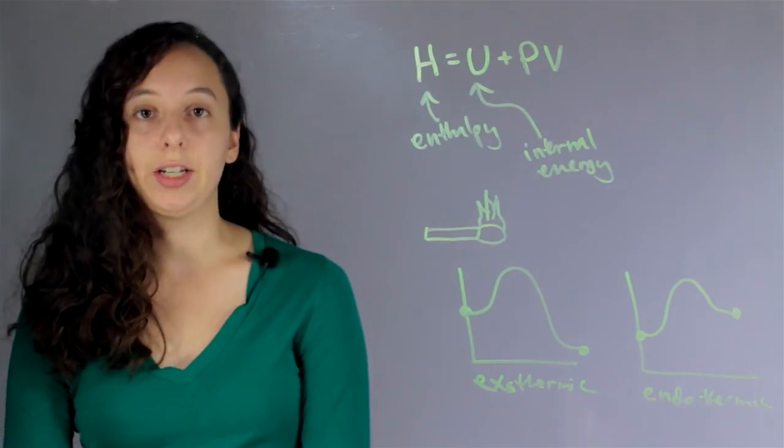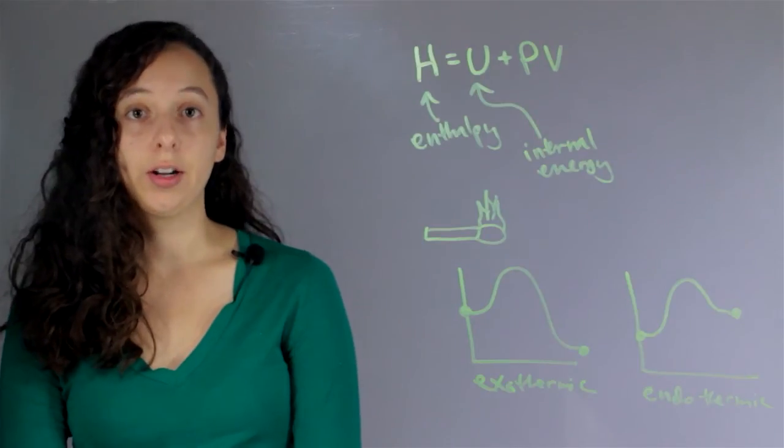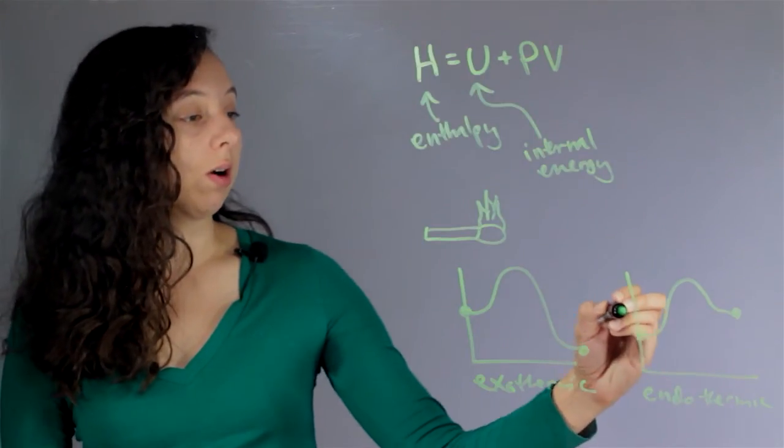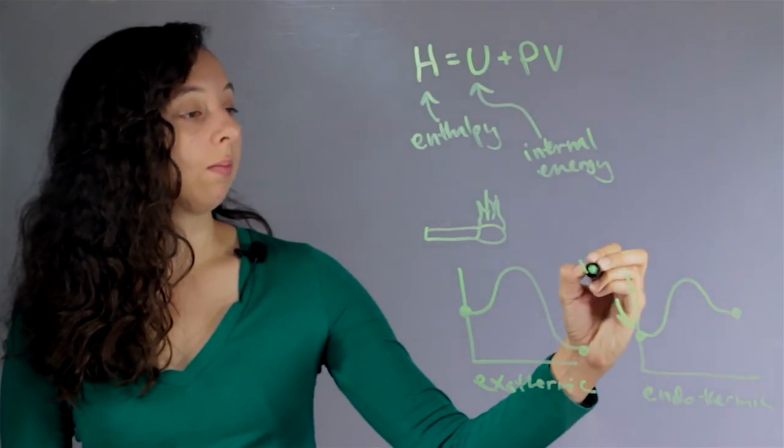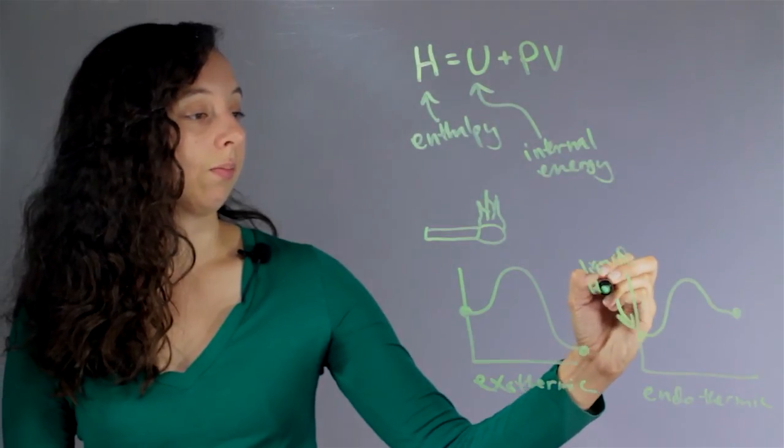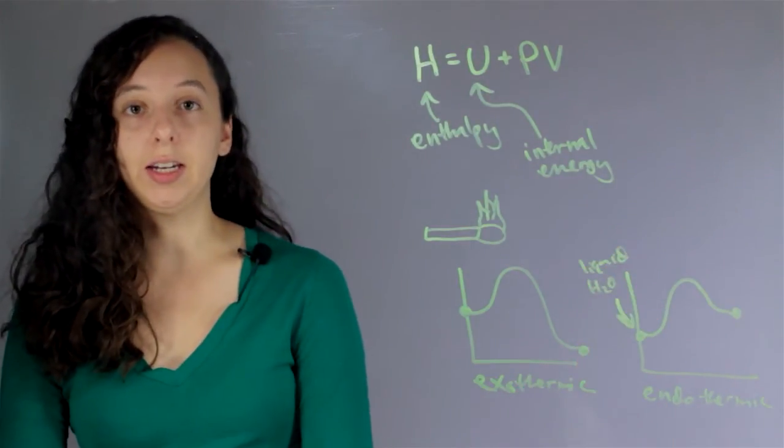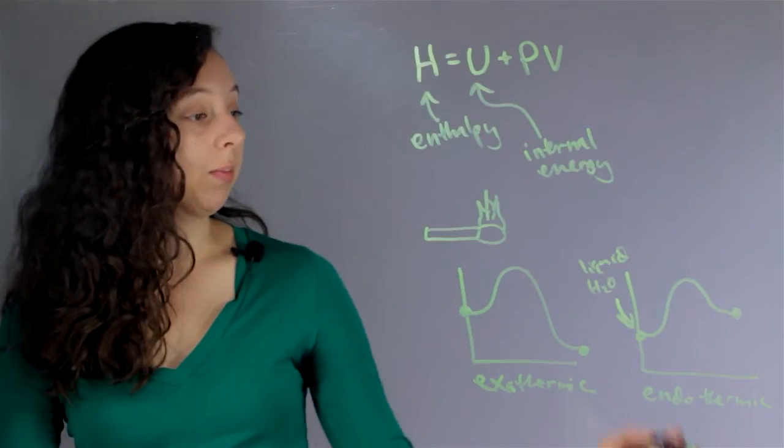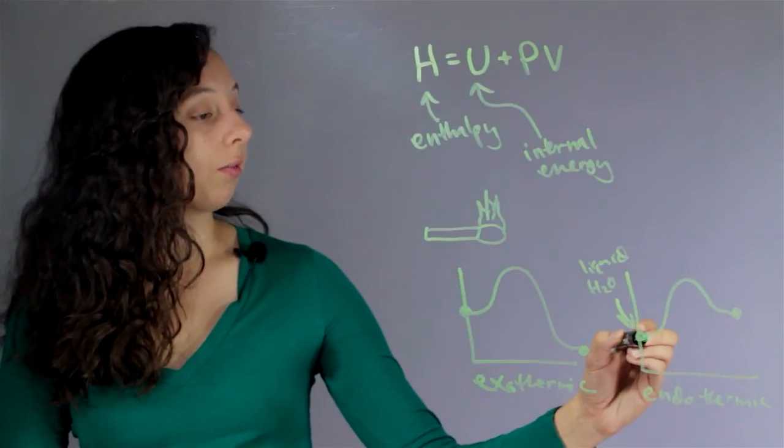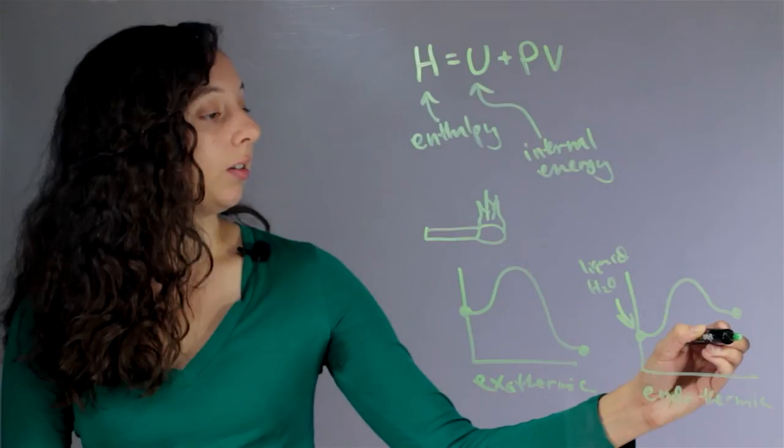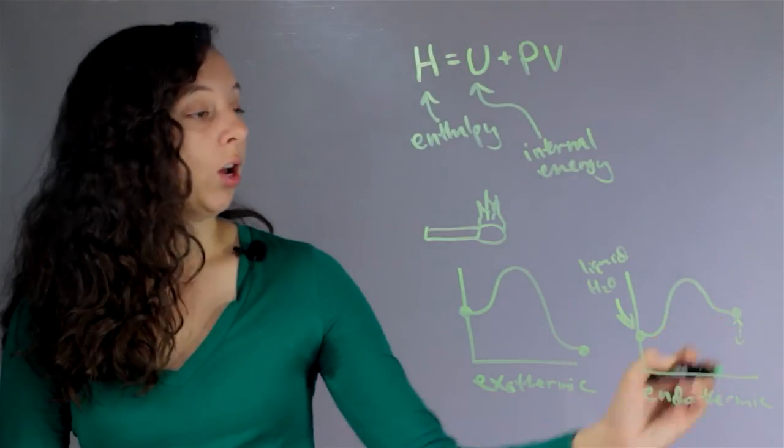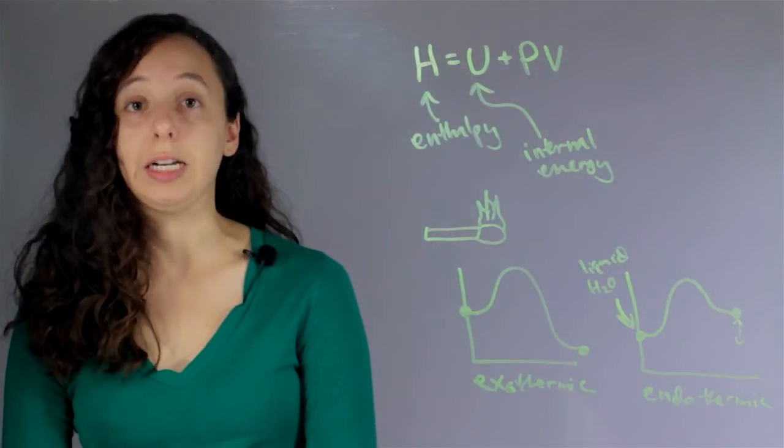An example of this in everyday life is boiling water. To get liquid water to boil, let's say this is our liquid water, we have to put a lot of heat into it so it becomes steam. This process of raising the heat from here to here would be our kettle or however we're heating that water.